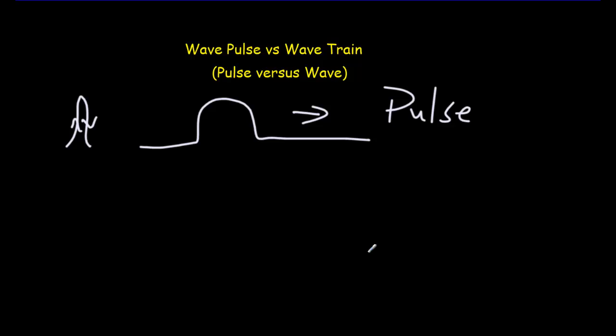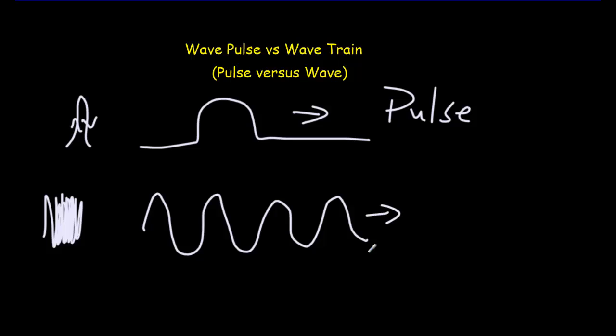That's a pulse with a single oscillation. If you oscillate your hand back and forth repeatedly, you generate what we call a wave train. I usually just call this a wave and refer to that as a pulse.